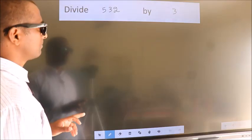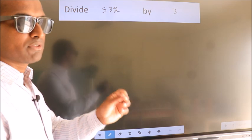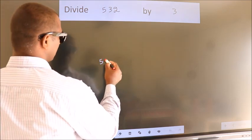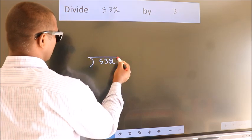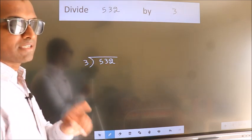Divide 532 by 3. To do this division, we should frame it in this way. 532 here, 3 here. This is your step 1.